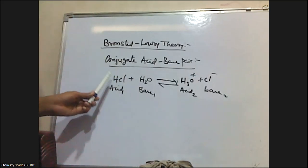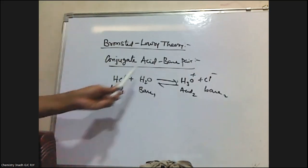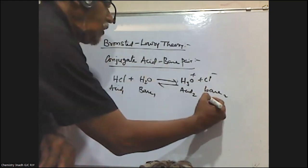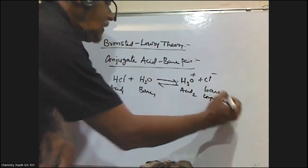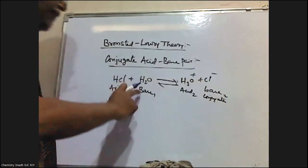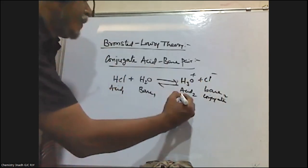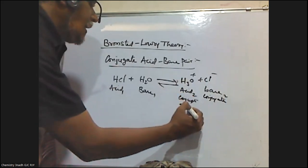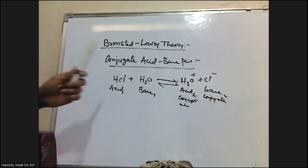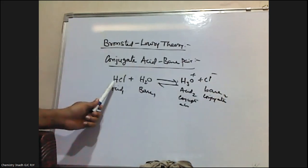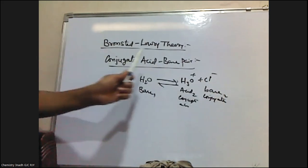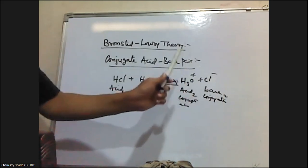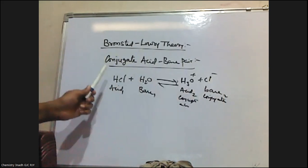So if you observe here, for an acid there is a corresponding base — we are calling it the Conjugate Base. Similarly, for a base there is a corresponding acid — we are calling it the Conjugate Acid. So for every species, if it is an acid, there should be a base which is called the Conjugate Base of that corresponding acid.